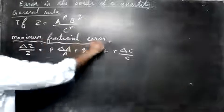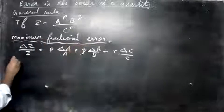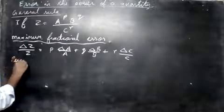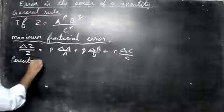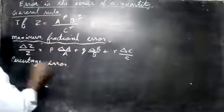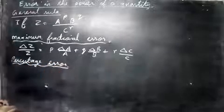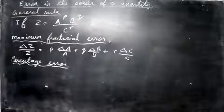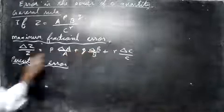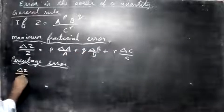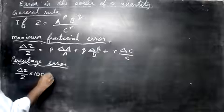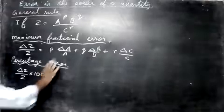Then next one to be noted is the percentage error. What will be the percentage error? You must multiply this by 100, that's the only thing. Multiply each term by 100. So delta z by z into 100 percent is equal to p into delta a by a into 100.